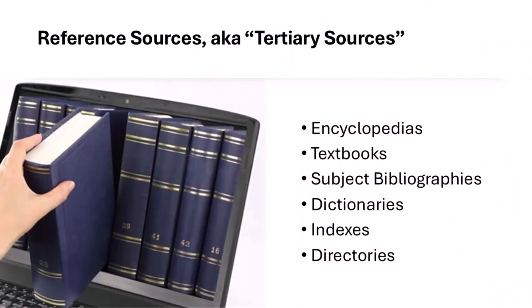We can also add a third level for works that compile or summarize multiple secondary and primary sources. These are called tertiary sources, or third-hand information. They are also referred to as reference sources. Examples like encyclopedias, textbooks, subject bibliographies, and even Wikipedia will generally fall into this category.